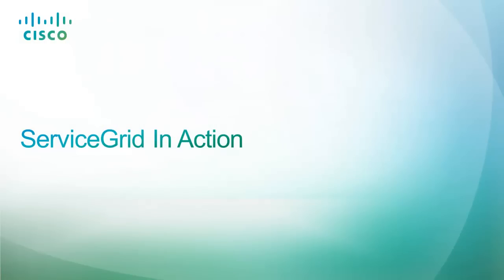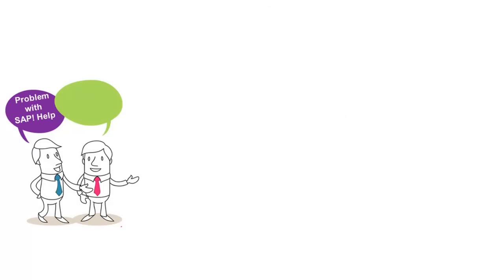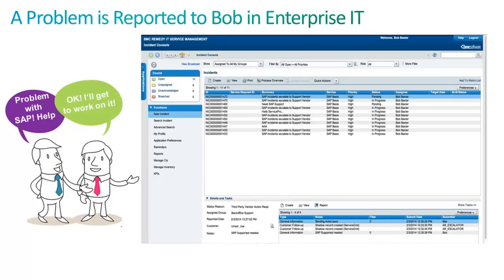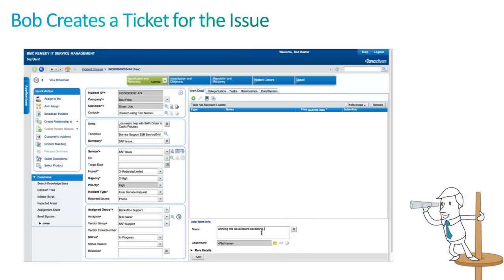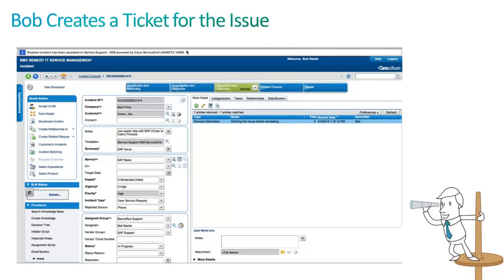Now let's take a look at Service Grid in action. Bob, in Enterprise IT, has just received an open ticket in his ticketing system from Joe, saying Joe is having issues with his SAP. So Bob creates a ticket for Joe's SAP issue and indicates he is going to try and fix his issue before escalating it to his outside vendor.